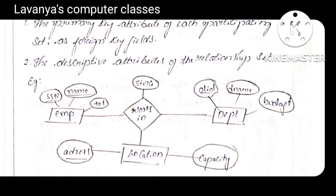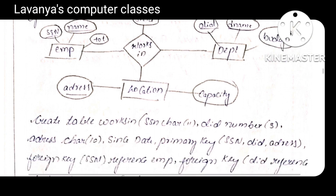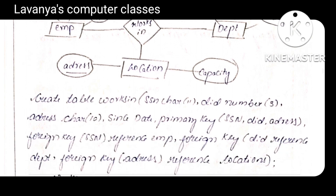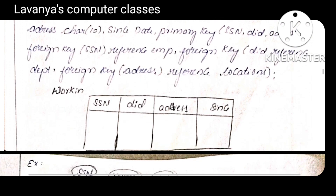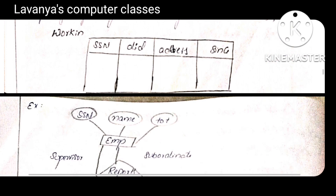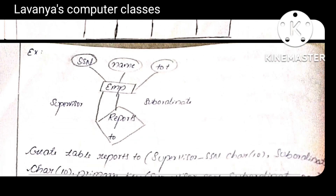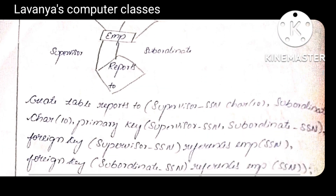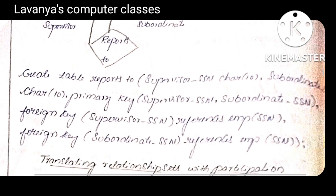This is a relationship diagram — how we convert a relationship into tables. It is also possible to convert relationships into tables.